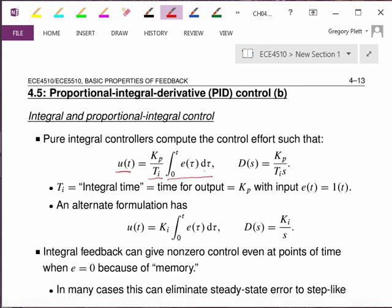And in the Laplace domain, remember that the running integral is one over S. So the controller transfer function is Kp over Ti*S. Kp could be any old constant, but later on we'll think of it as, when I'm doing a proportional integral controller, as still being the proportional constant. Ti is the integral time constant, and it turns out to be the time for the output to get as high as Kp when the input is a unit step function.